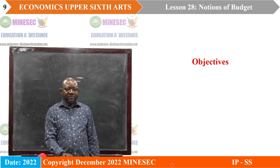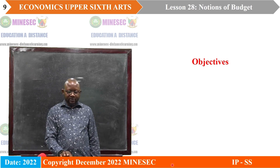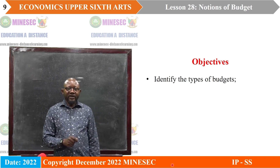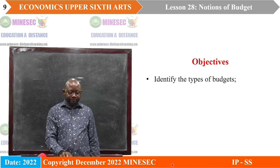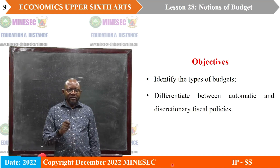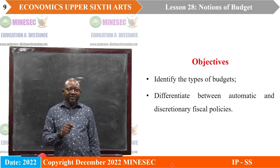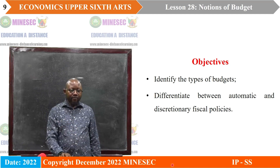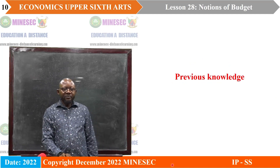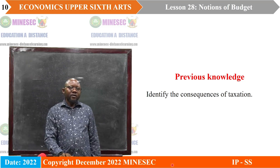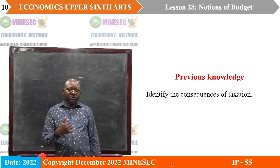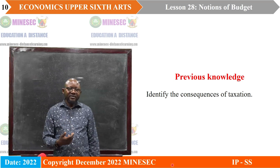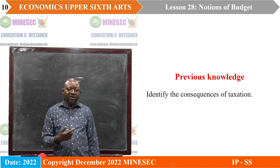Lesson objectives: by the end of this lesson, students should be able to identify the types of budgets. Equally, they should be able to differentiate between automatic and discretionary fiscal policies. Let's look at the previous knowledge — students can identify the consequences of taxation.